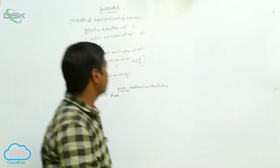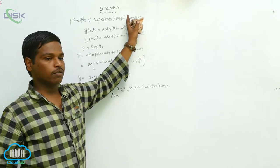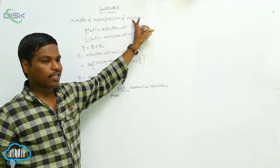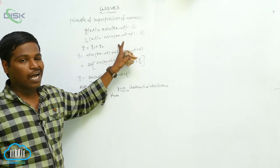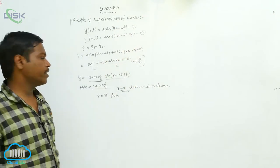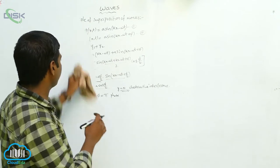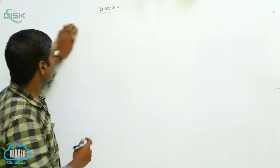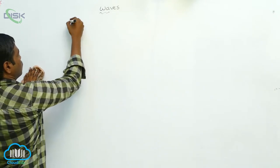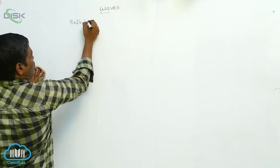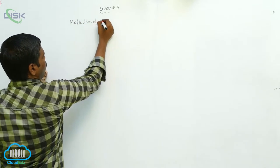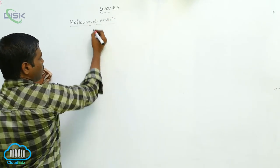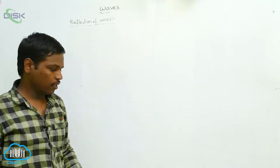This is the principle of superposition of waves: when two or more waves are traveling in a medium, the resultant displacement is the algebraic sum of the displacements. Now, reflection of waves — this is similar to our regular reflection.